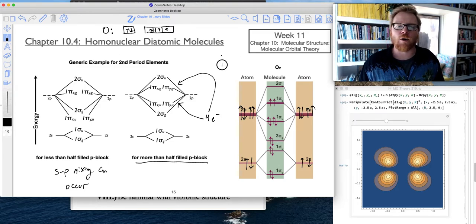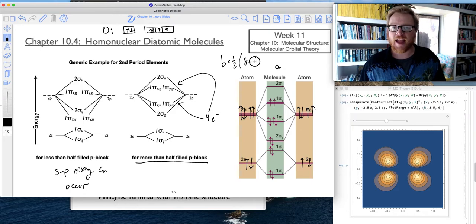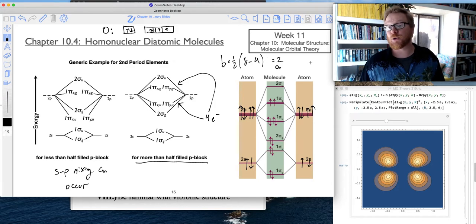So now what about the bonding order of oxygen for this? Well, 1 half times, and I've got 1, 2, 3, 4, 5, 6, 7, 8 bonding electrons. And I've got 1, 2, 3, 4 anti-bonding electrons. 8 minus 4 is 4 times 1 half is 2. And we know oxygen has a double bond with two lone pairs.